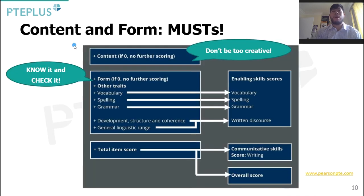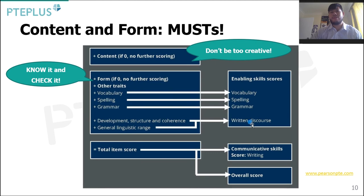Remember, we have to get both content and form scores. If we get zero for content, then we get no form score or anything else. If we get zero for form, we keep our content score but get zero for form, meaning we get nothing for the other enabling scores like vocabulary, spelling, grammar, and written discourse. So content comes first, and after content comes form, because getting zero for either takes away everything else.